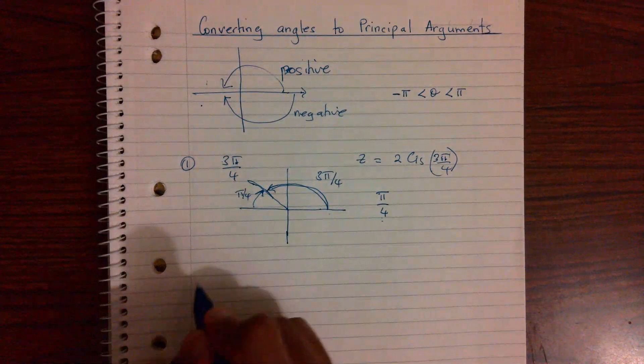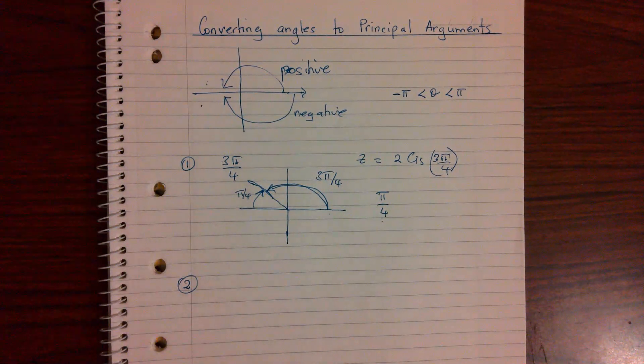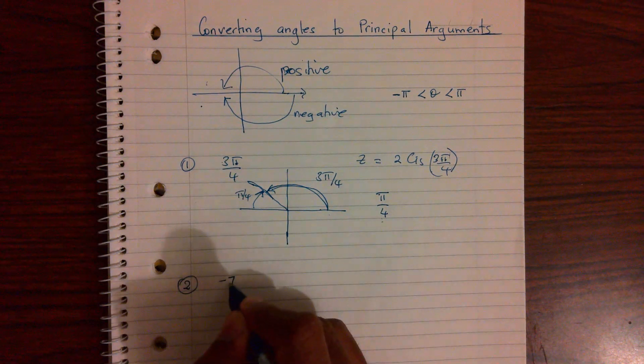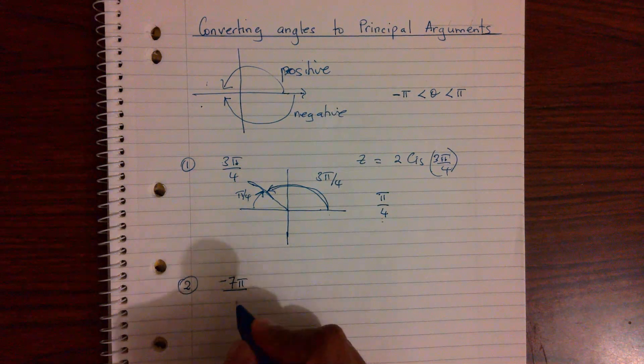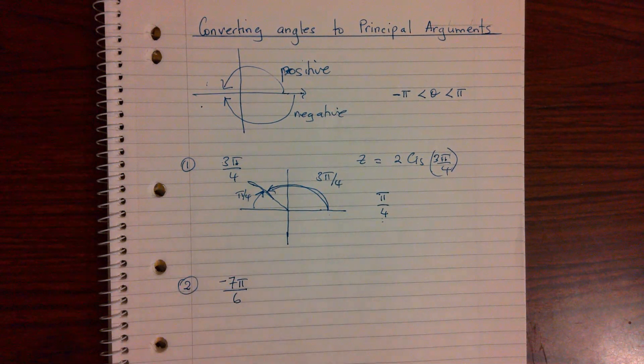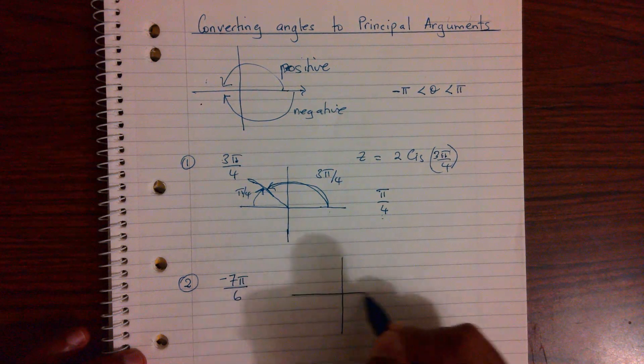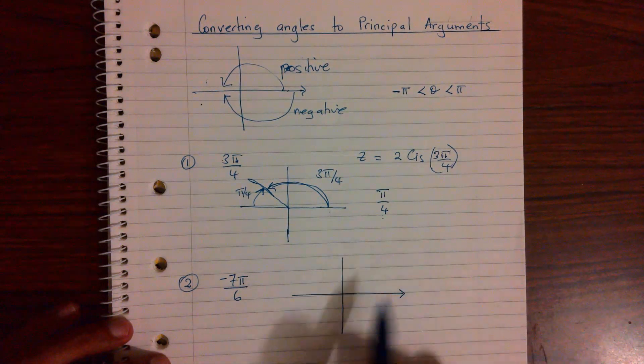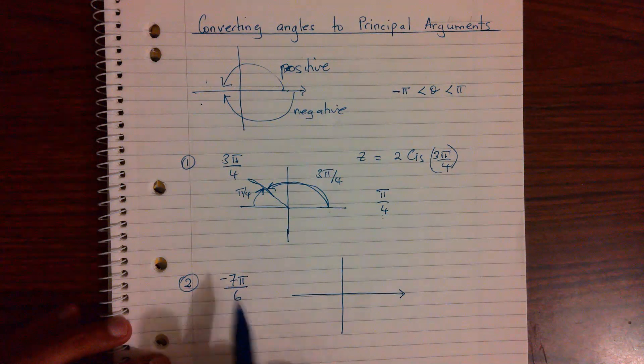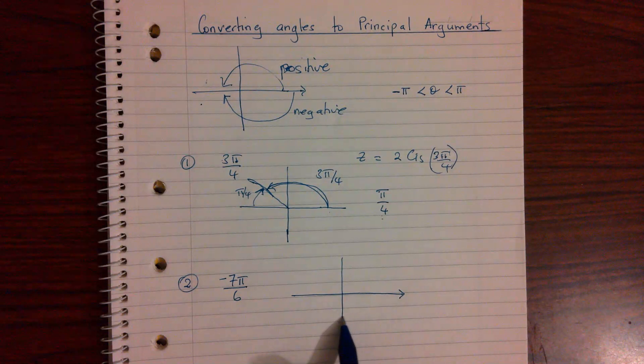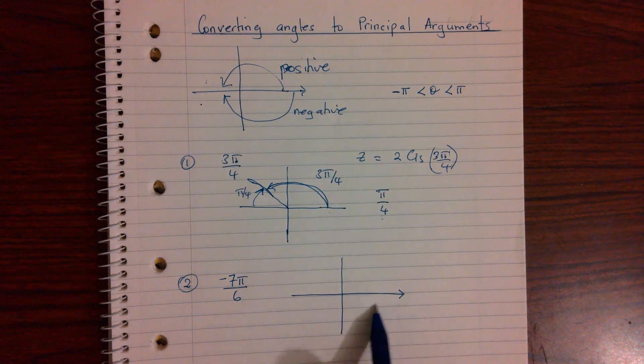We'll look at example number 2, where this angle will not be a principal argument. For example, take negative 7π over 6. Now where is this? Where does this fall? Let's draw our quadrants again. And from my positive x axis, because it's a negative angle, I will try and visualize this bit here.